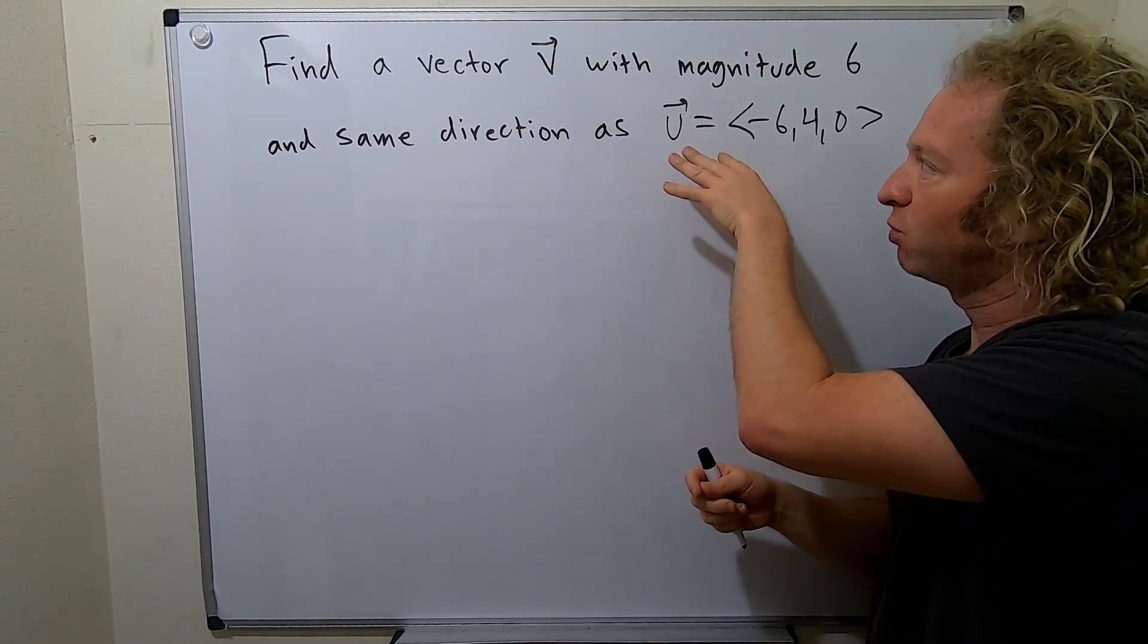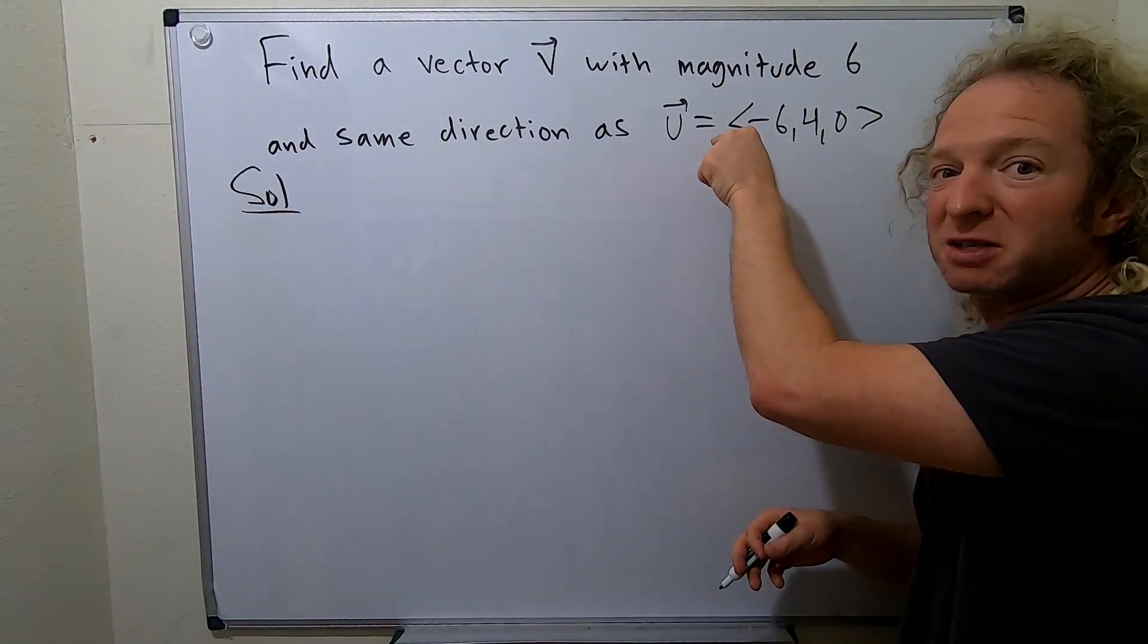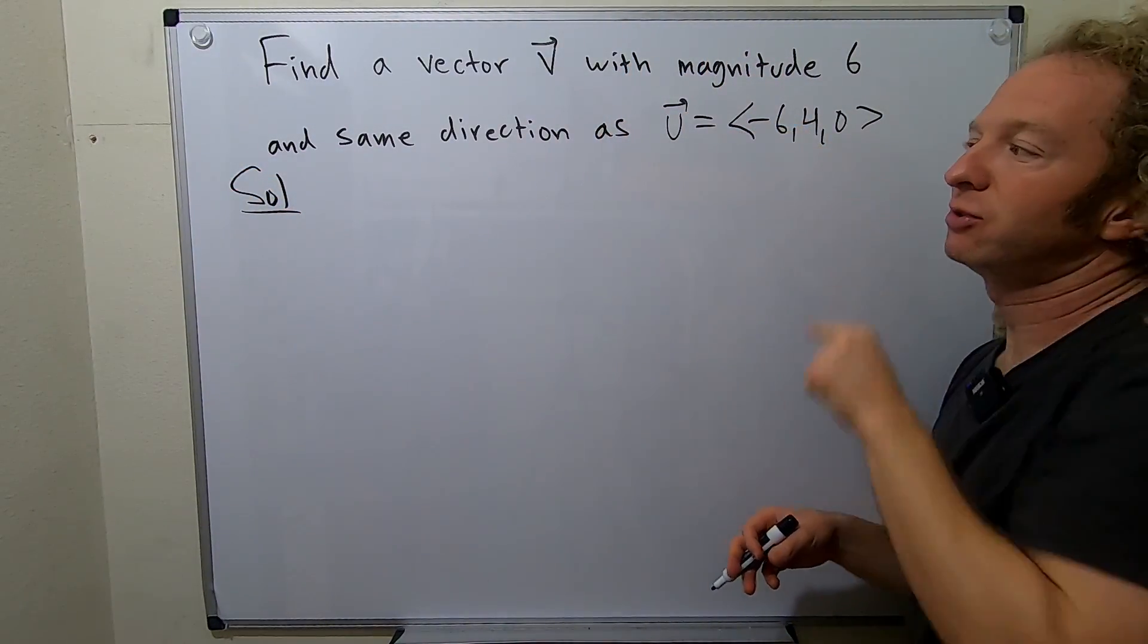So step 1 is we're going to normalize this, turn it into a unit vector. To do that, we just divide by its magnitude. So we have to find the magnitude of this first.